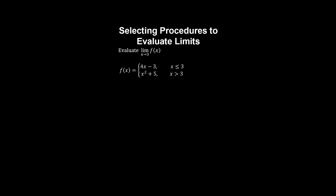Let's evaluate the limit of this piecewise function as x approaches three. We need to check if the limit as x approaches three from the left hand side exists. From the left hand side, we use this function definition, and substituting three we get twelve minus three, which is nine. We also need to check the limit as x approaches three from the right hand side, using the other function definition. So we have three squared plus five, which is fourteen. The limits from both sides of three are not equal, and therefore this limit does not exist.